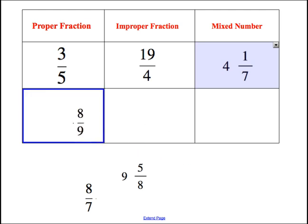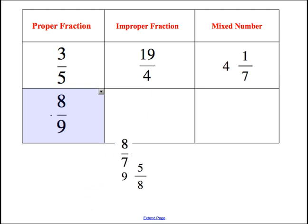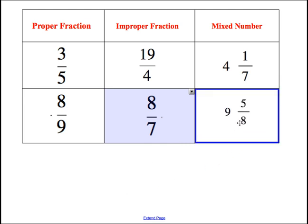8 ninths will be a proper fraction. The numerator is less than the denominator. 8 sevenths is an improper fraction. The numerator is more than the denominator. And 9 and 5 eighths is a mix of a whole number and a fraction, which is why it is a mixed number.